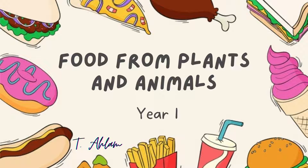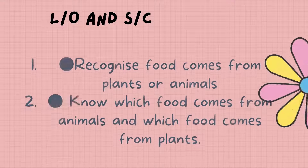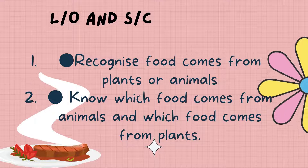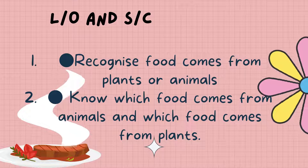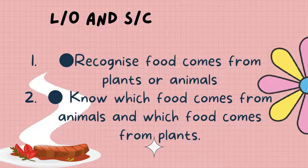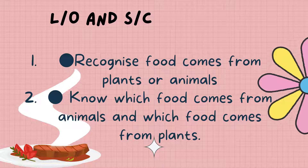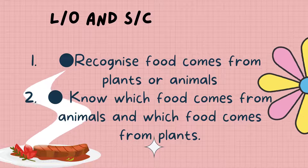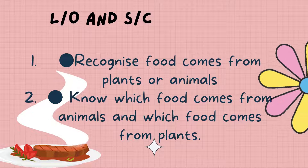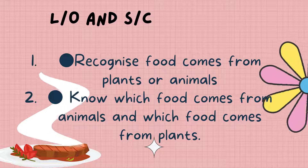So what is our learning objective for today? At the end of the class, you should recognize that food comes from plants or animals, and you should know which food comes from animals and which food comes from plants.